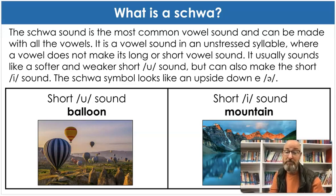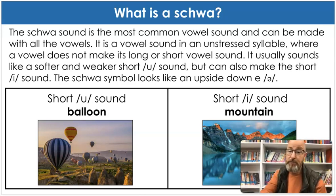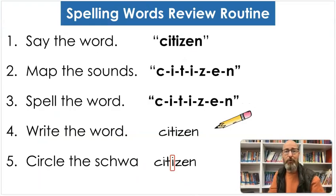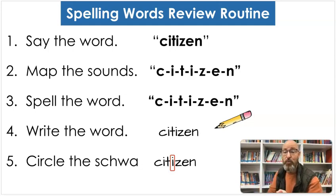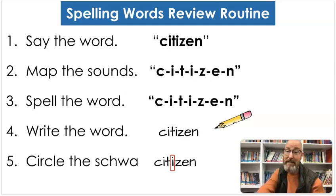Schwa has two sounds, not just one. My sound wall just says one, but we're going to get that fixed. We're going to use our same pattern as before: we're going to say the word, tap the sounds, spell it, write it, and circle the schwa — we're going to find it in our words. This one might be a little bit more challenging for some of us, but I bet by the end we'll be experts. All right, let's get started.